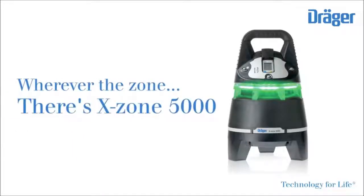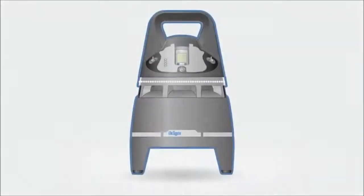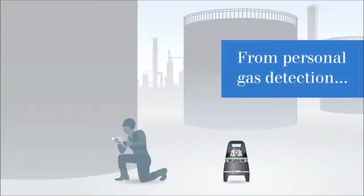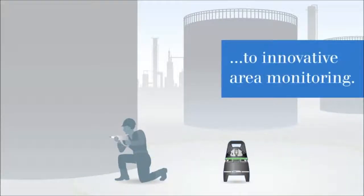It is so flexible, in fact, the only limitation is your imagination. The X-Zone turns your Draeger X-Am 5000 and 5600 Personal Gas Detector into an innovative area monitoring device. Just position the X-Zone with the Personal Gas Detector inside where gas hazards are expected.